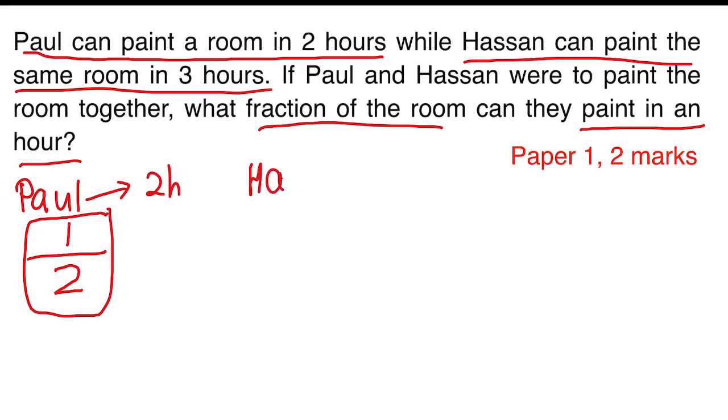And then let's go into Hassan. For Hassan, he can paint the room in three hours. But taking note that that's the total, they are only given one hour now. So he can paint one third of the room.